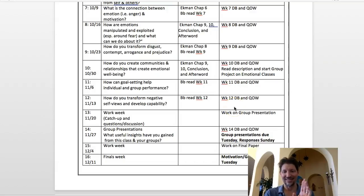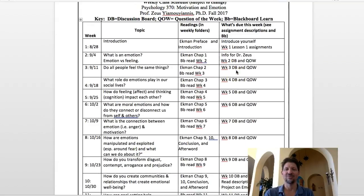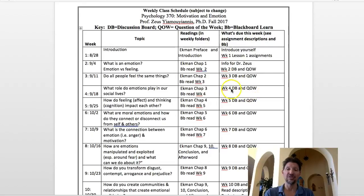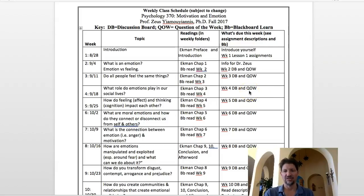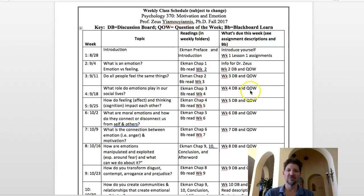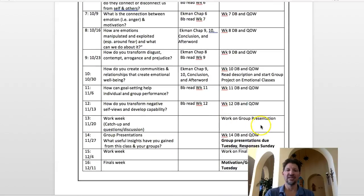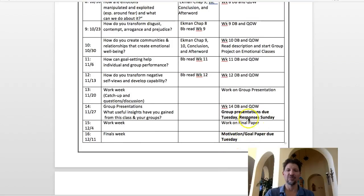I'm not just clobbering you every week with work. Every week there's a discussion board question, which focuses on the role emotions play in social life. There's going to be a more personal focus question about your personal life, and one that involves applying academic work in the question of the week section. The discussion board is 10 points, the question of the week is 15, for a total of 25 pretty much every week. We also have a group presentation worth 100 points and a final paper worth 150 points.